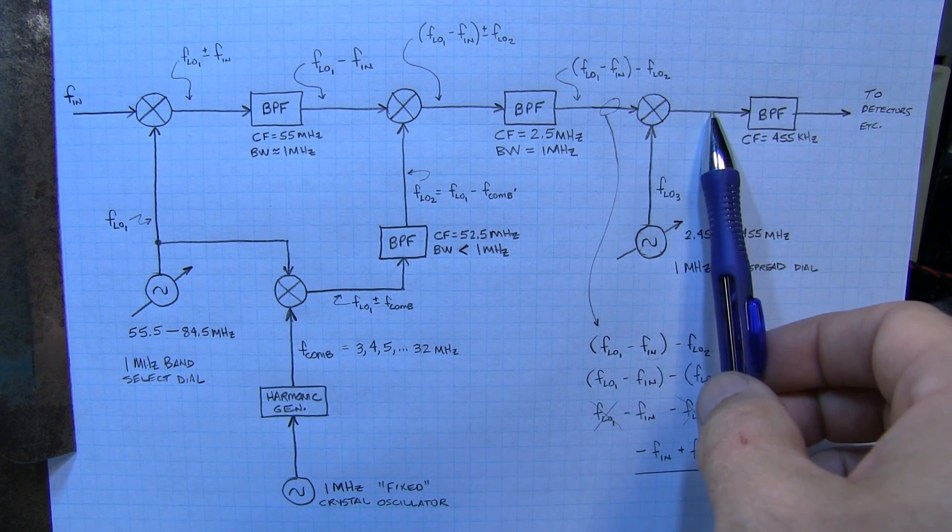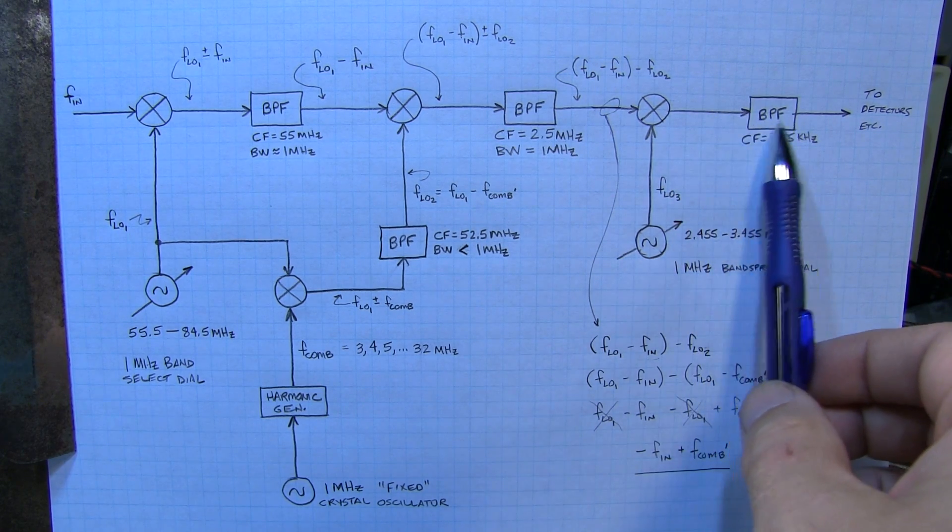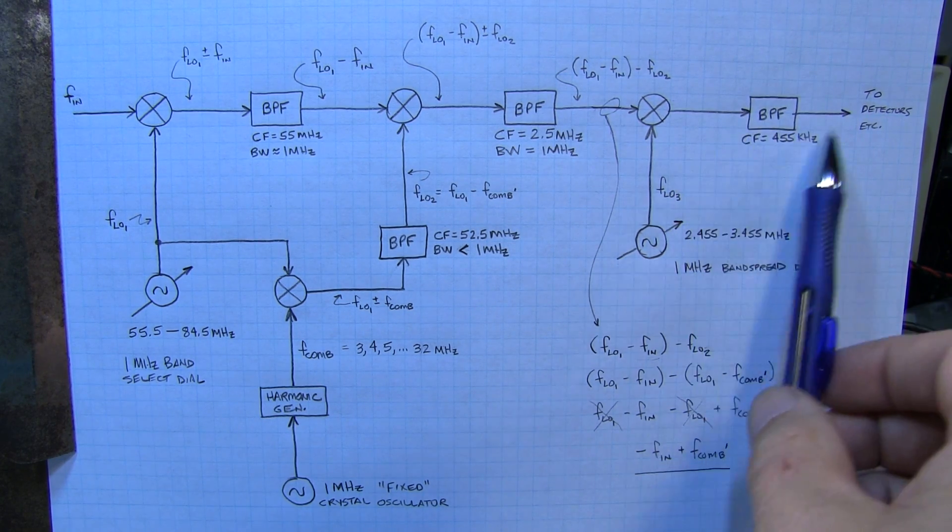And then that is essentially the output that will go to your conventional bandpass filtering and detectors for the rest of the receiver.